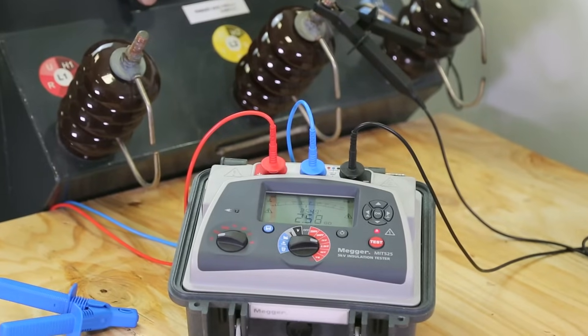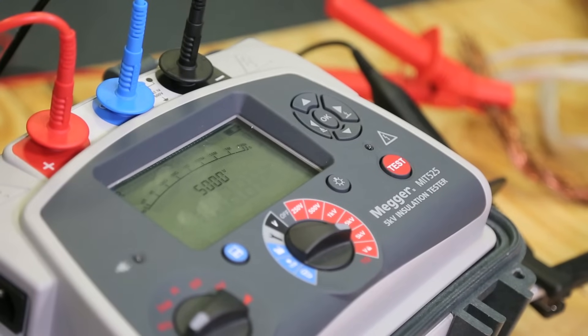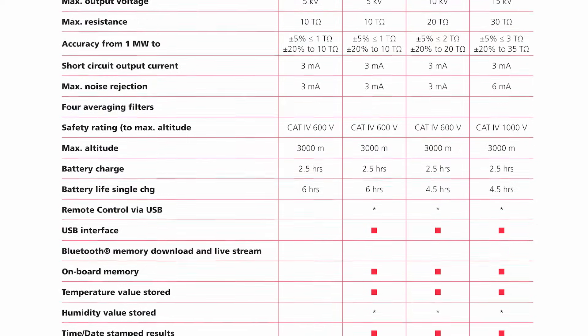The MIT-515 is an entry level 5 kV instrument but it does not compromise on safety or performance. The others in the range all have diagnostic tests with result storage and download to Megger software.